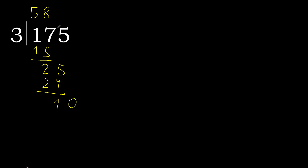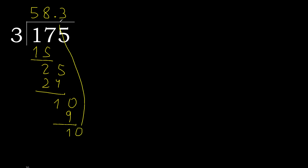We always complete with a decimal point when there is a remainder — so add a point and bring down a 0 to get 10. 3 multiplied by 4 is 12 — that is greater. 3 multiplied by 3 is 9 — 9 is not greater. Subtract: 10 minus 9 is 1. Complete that step.